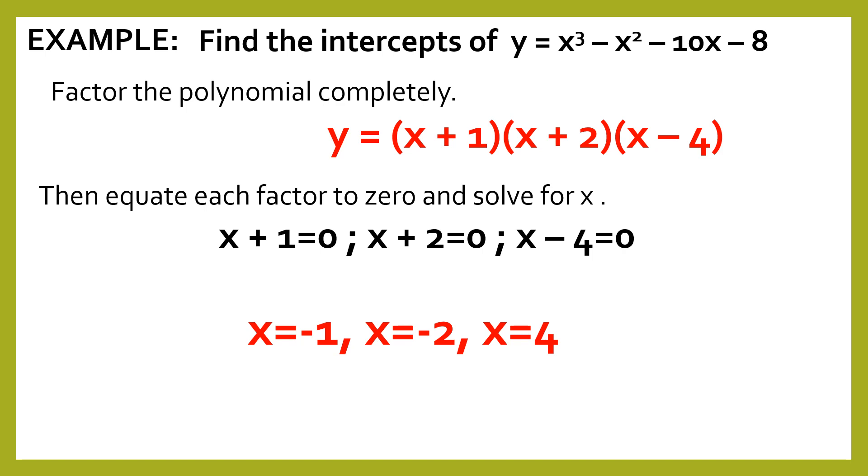Remember that we are looking for the x-intercept. So in the x-intercept, your x has a value, and your y is 0. So the x-intercepts in this polynomial function are negative 1, 0, negative 2, 0, and positive 4, 0.